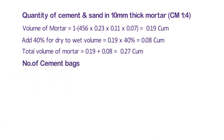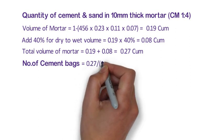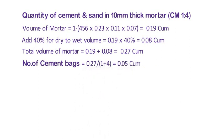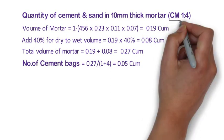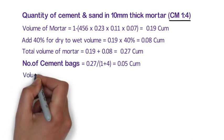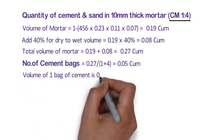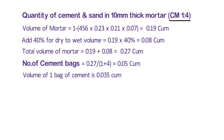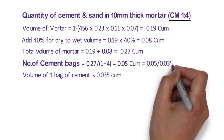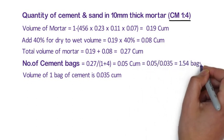Now we will calculate number of cement bags. The formula is 0.27 divided by (1+4) is equal to 0.05 cubic meter. Here 1:4 is the proportion of cement mortar, hence the cement part shall be 1+4 equal to 5, and that's why I have divided total quantity of mortar by 5. The volume of 1 bag of cement is 0.035 cubic meter, hence we will divide by 0.035 to convert it into bags. The formula is 0.05 divided by 0.035 is equal to 1.54 bags.